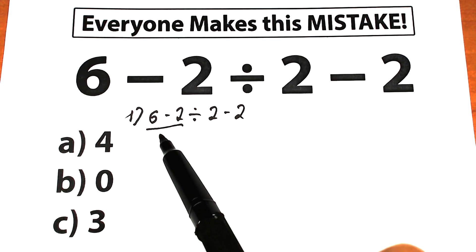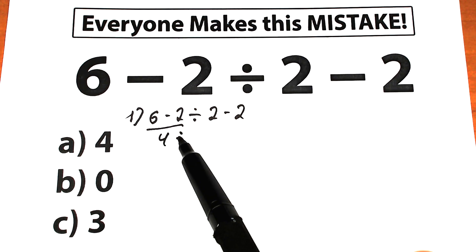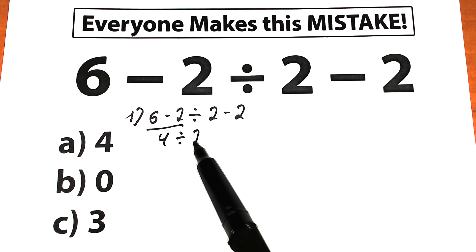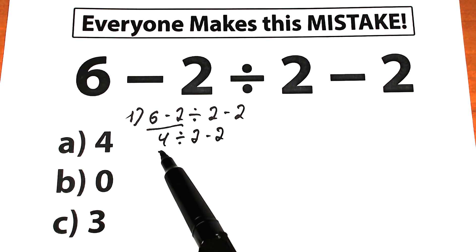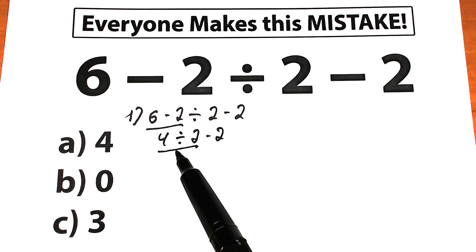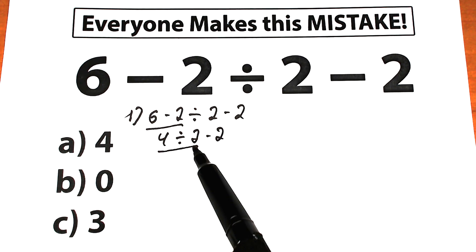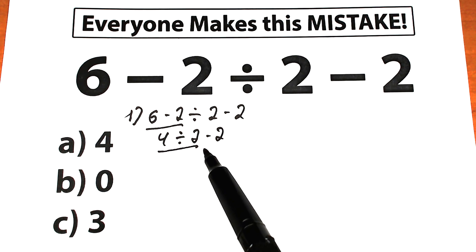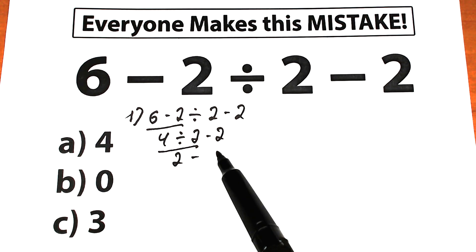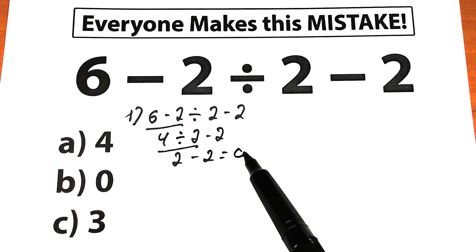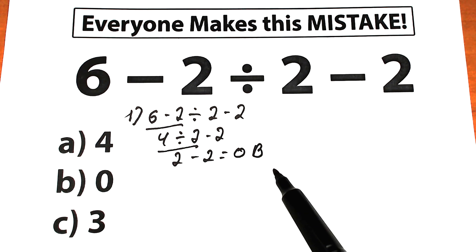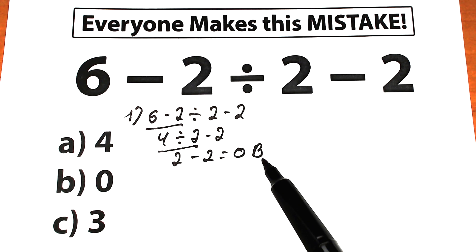They say: 6 minus 2 equals 4. Then 4 dividing by 2 — next step is division from left to right — 4 divided by 2 equals 2. Then 2 minus 2 equals 0. Option B. A lot of students say this is the correct answer and move on.